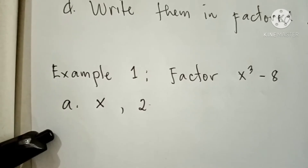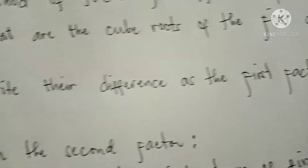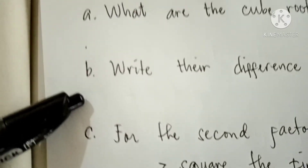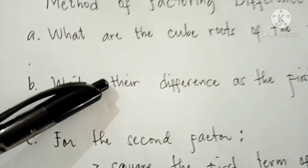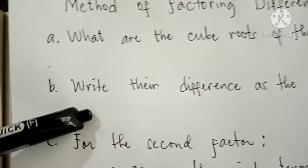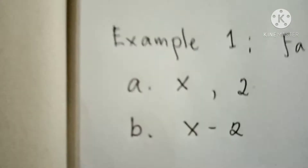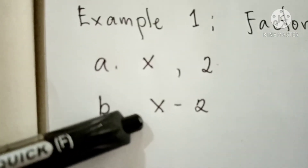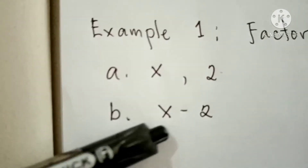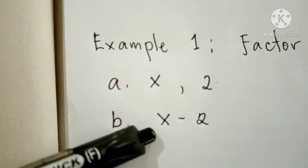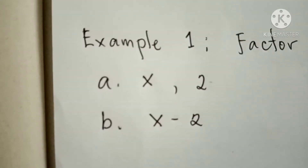Now we are going to go to the second step: write their difference as the first factor. We are going to write their difference — simply subtract them. For step 2, we have x minus 2, because we write the difference of the two cube roots, x and 2.